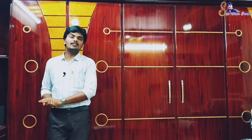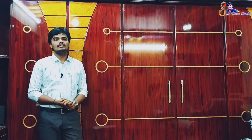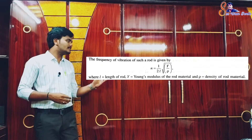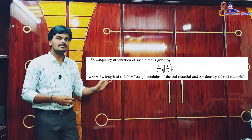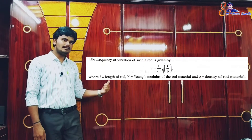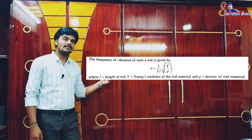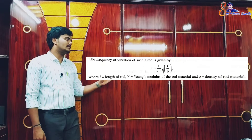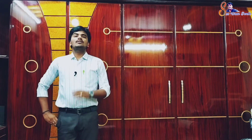The frequency of vibration of such a rod is given by: n = (1/2l) × √(Y/ρ), where l is the length of the rod, Y is the Young's modulus of the rod material, and ρ is the density of the rod material.